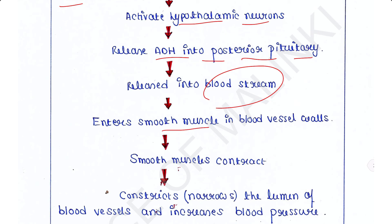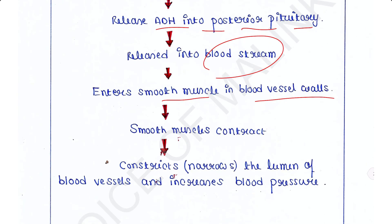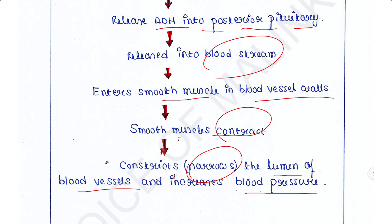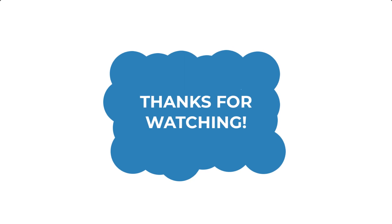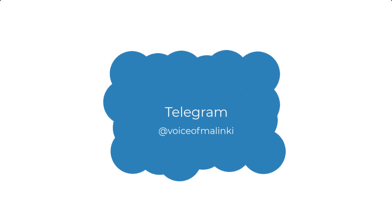From the posterior pituitary, this hormone is released into the bloodstream. Blood carries ADH to the smooth muscle in blood vessel walls. The smooth muscle in the walls of the blood vessels contracts in response to ADH, which constricts — or narrows — the lumen of the blood vessels and increases blood pressure.